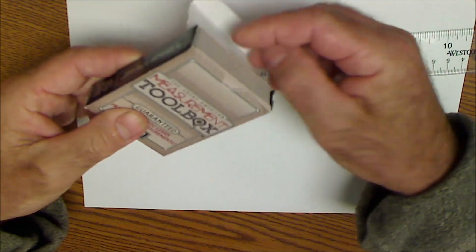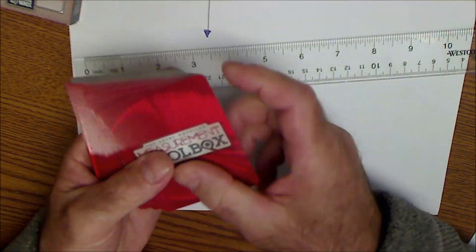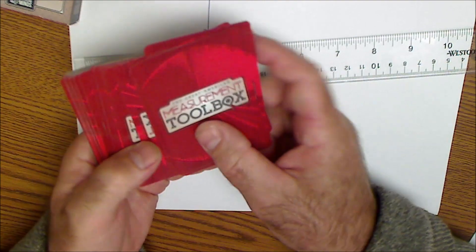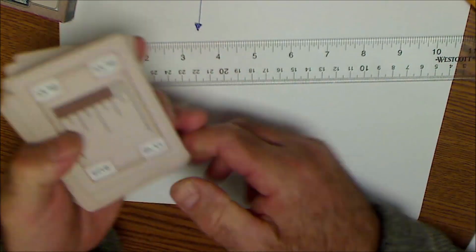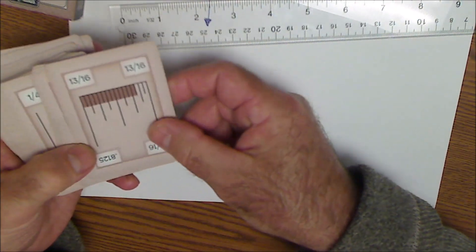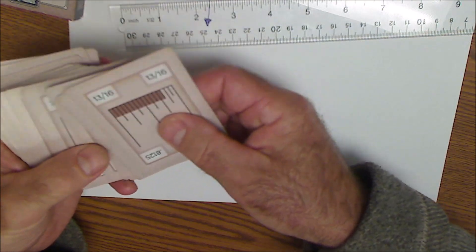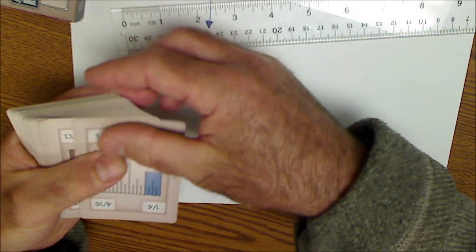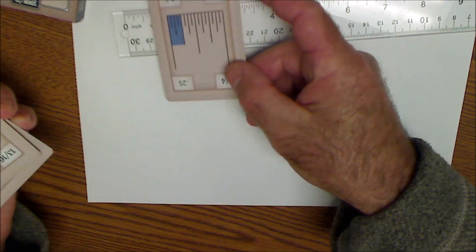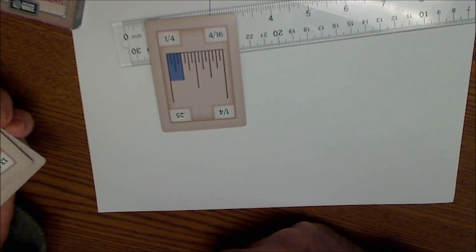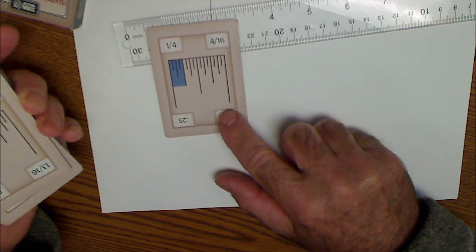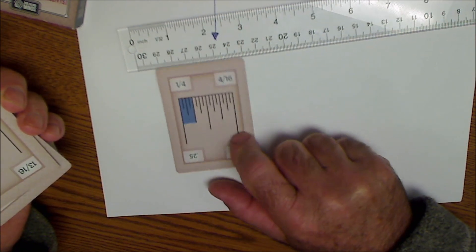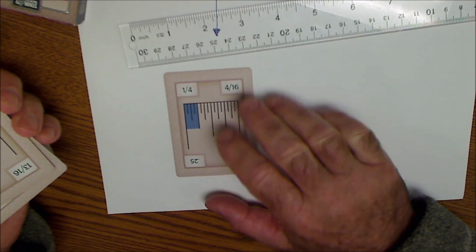The other thing I have is I came up with these fractional playing cards right here called Measurement Toolbox, and these work the exact same way. They're really designed to build fluency in fractions. You could get a deck of these at MeasurementToolbox.com and you could play games with them. Any game you play with a regular deck of cards you could play with these. So that's another way to build fluency.